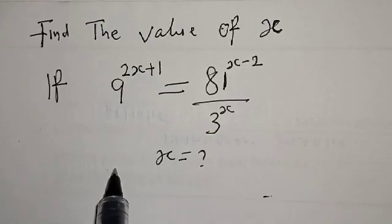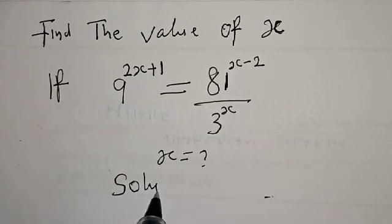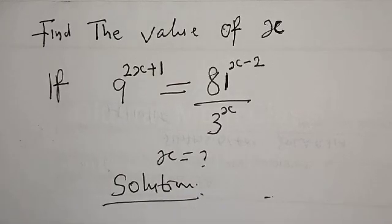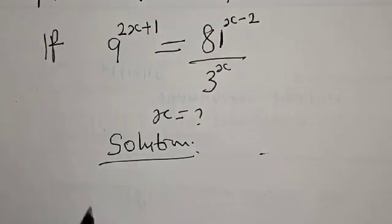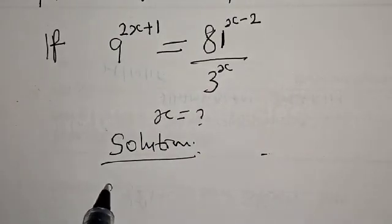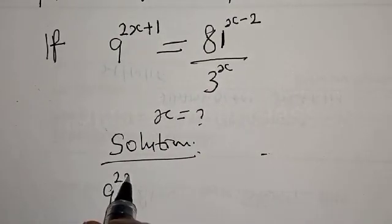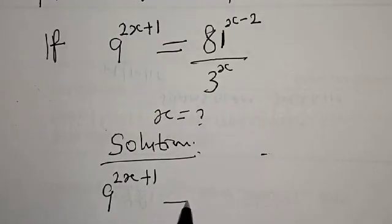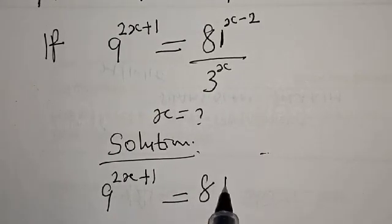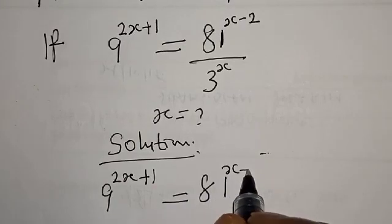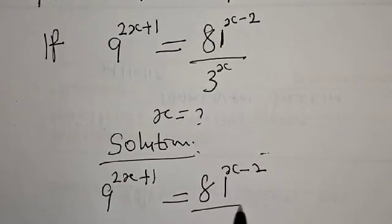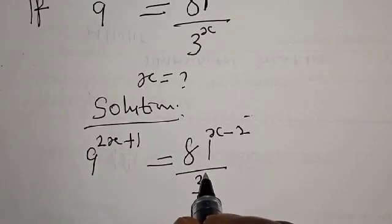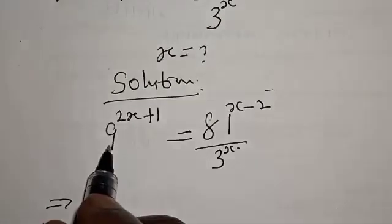Solution. We have the given equation as 9 raised to power 2X plus 1, to be equal to 81 raised to power X minus 2, over 3 raised to power X.